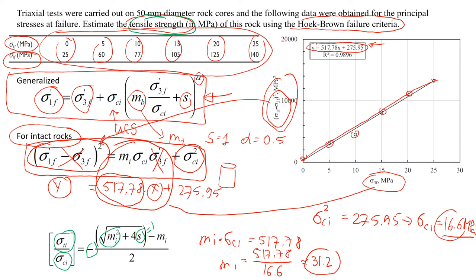So what I'm going to do, I will rewrite it here. So sigma t, which is tensile strength, divided by unconfined compression strength, 16.6. It is equal to negative. Then square root of mi in the power of 2. It will be 31.2, in the power of 2. And plus 4 times s, and it's 1. That's the assumption that we use. And subtract mi, which is 31.2, and I'm going to divide it by 2.